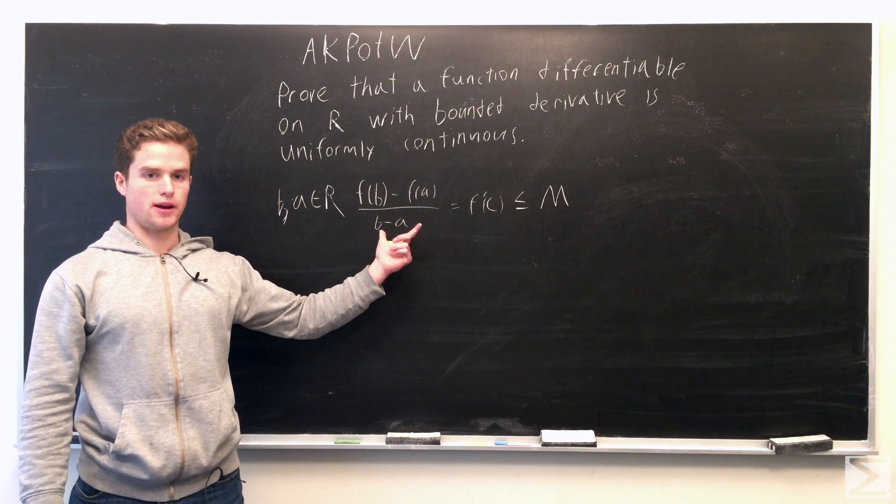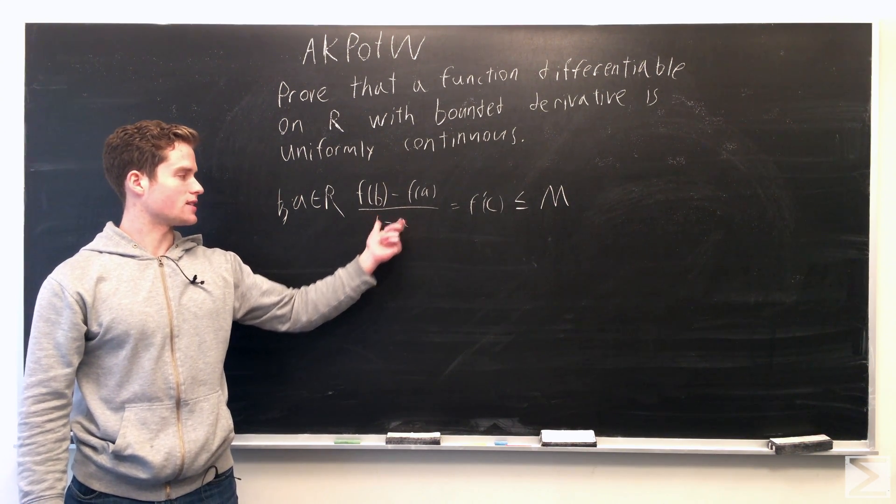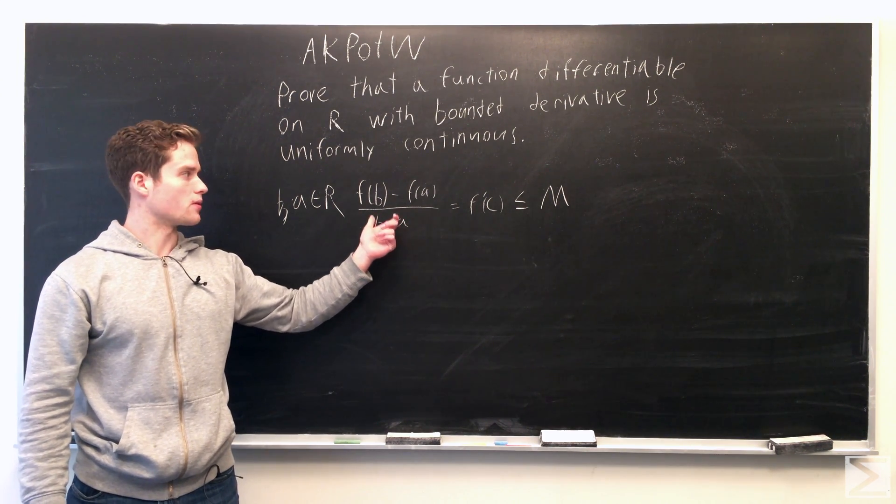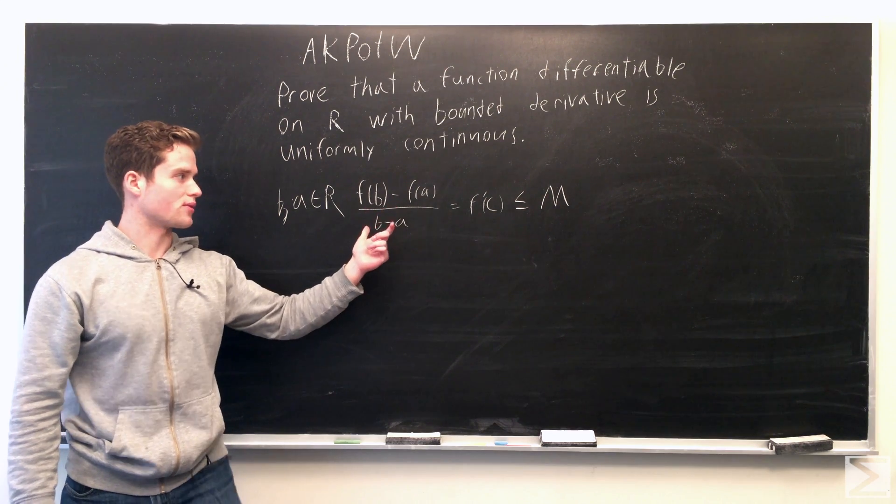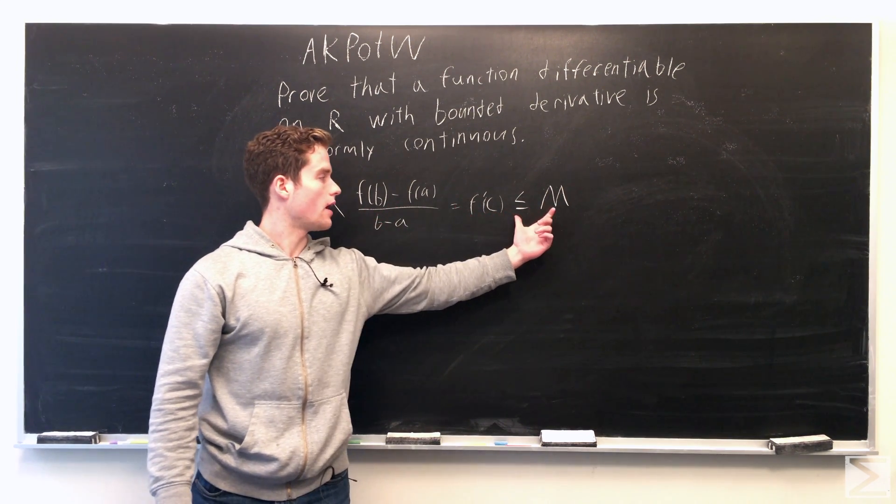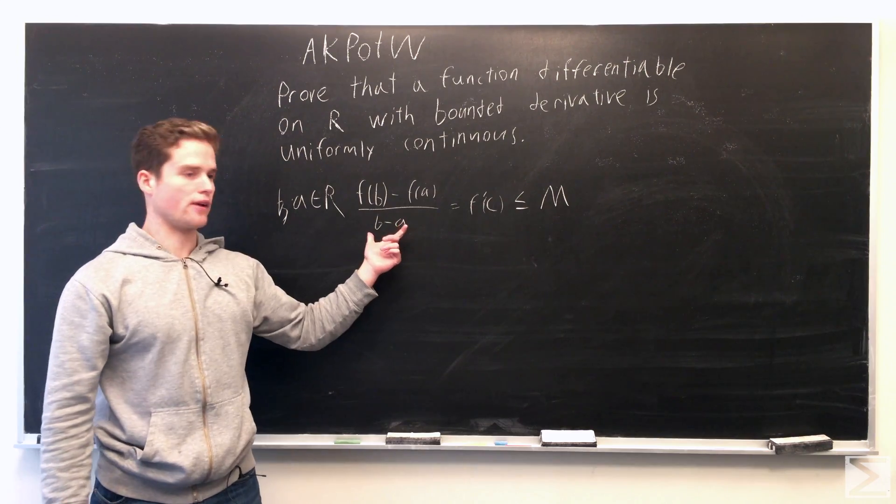So if this was unbounded, if f of b minus f of a, we could make this arbitrarily large, it would contradict the boundedness of the derivative. And so this is bounded as well.